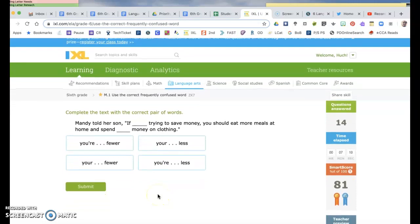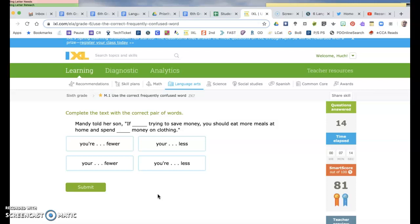Mandy told her son, if blank trying to save some money, you should eat more meals at home and spend blank money on clothing. So if you are trying, so I need this your with the apostrophe to save money. We don't say fewer money, we say less money, so it's going to be that one.